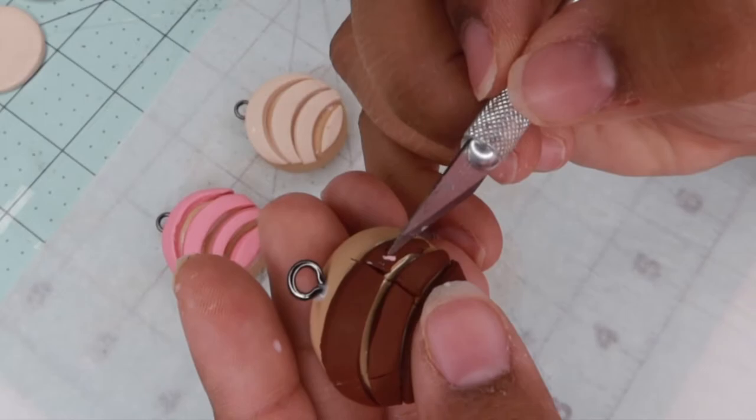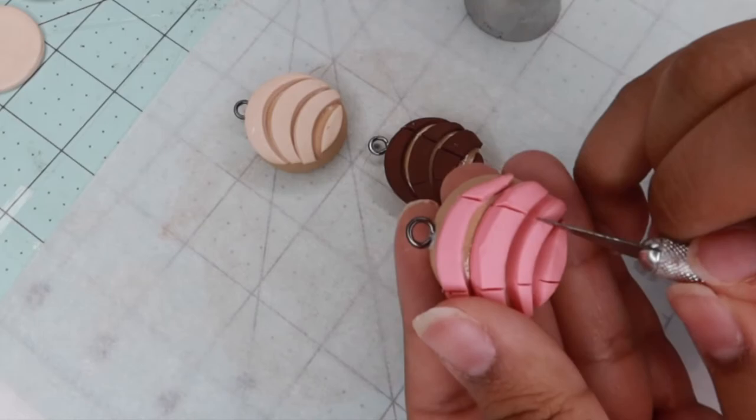Now with my exacto knife I go ahead and score some little lines into the topping of the concha just to make them look more realistic, and I repeat the process for all three.